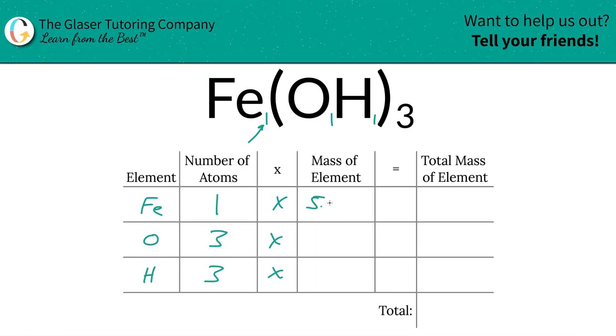So 55.85, then we have 16, and then we have 1.01. All right, those masses can either be amu or grams per mole depending upon if you're calculating molecular mass or molar mass.